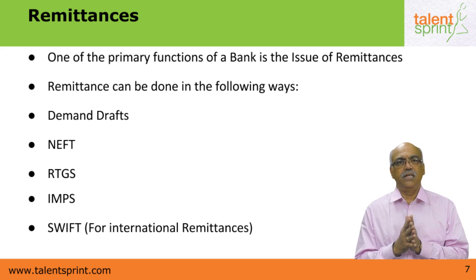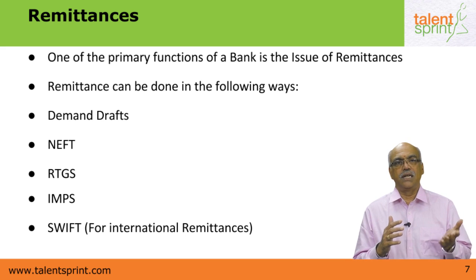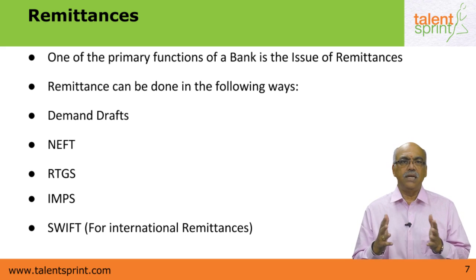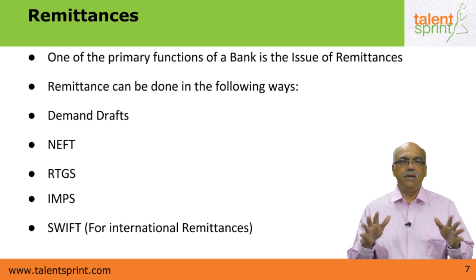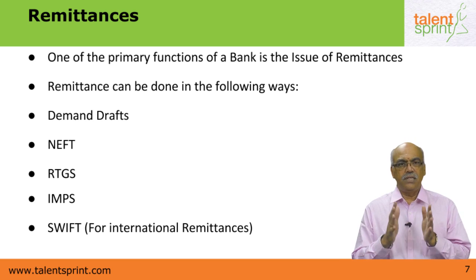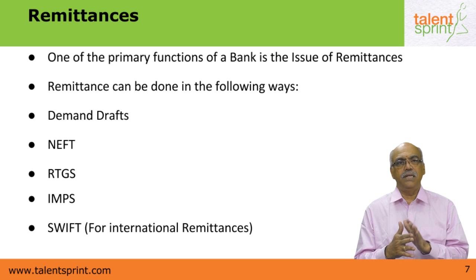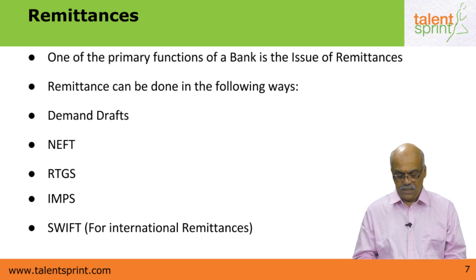We are not going to talk of check issuance here because we have already dealt with the clearing house, how checks are cleared, how the National Payment Corporation is involved, what is MICR and the MICR code — all that was covered in a separate video. In this video we are going to talk of the other forms of remittances: demand drafts, NEFT, RTGS, IMPS, and SWIFT — SWIFT being only for international transactions.